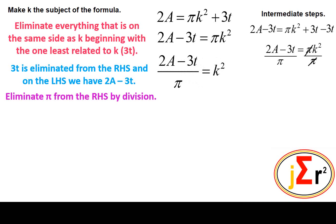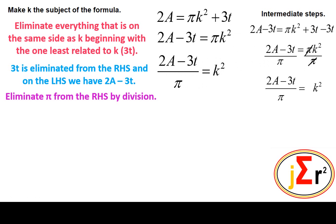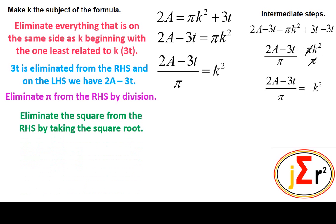Notice that k is still not by itself because we have k squared. We need to eliminate the square finally. We do that by imposing the opposite of squaring, which is taking the square root. We eliminate the square from the right hand side by taking the square root, and we do the same to the left hand side so the equation remains balanced. The square root and square cancel each other, and on the left hand side we have the square root of (2a − 3t) / π.